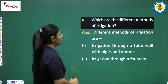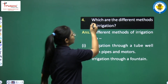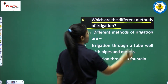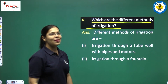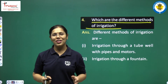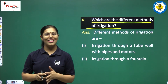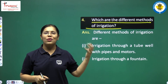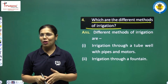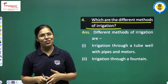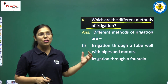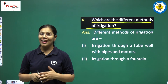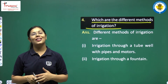The next question, question number four, is: which are the different methods of irrigation? Yes, there are different methods of irrigation and we have seen some methods of irrigation in our chapter. You are being asked about those different methods of irrigation. Which are the different methods of irrigation?